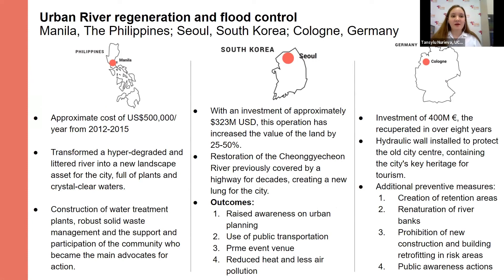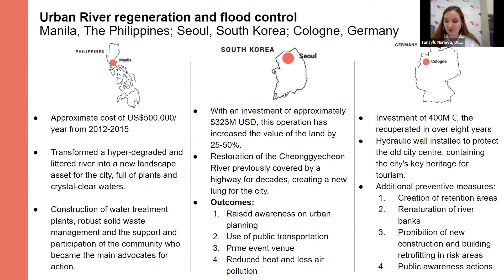First, I would like to mention the city of Manila in the Philippines. There, a project was implemented aimed at the restoration of the Pasig River, building on the values of blue infrastructure. The project ran from 2012 to 2015, transforming a heavily degraded river into a new landscape asset with plants and clean waterways. What was done: a water treatment plant was constructed, robust solid waste management was carried out, and the community was actively involved.